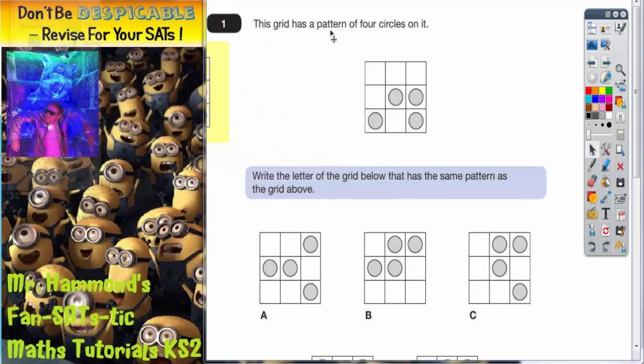Question 1. This grid has a pattern of four circles on it. Now you can see the four circles. Write the letter of the grid below that has the same pattern as the grid above.